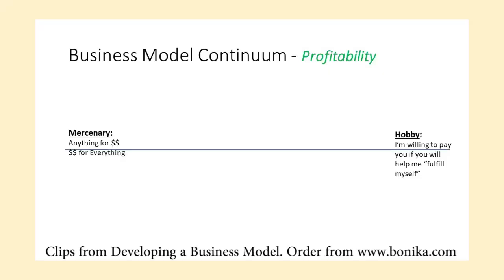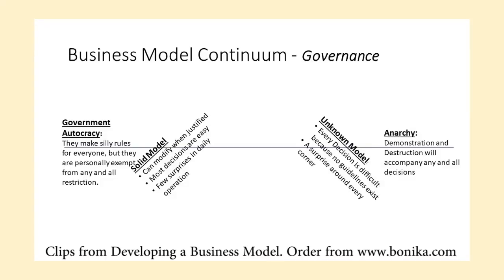The first continuum we're going to talk about is profitability. At one extreme you have the mercenary — a mercenary will do anything for a dollar, but it will be a buck for everything. At the other extreme you have a hobbyist: a super talented guru in the organization working on a fantastic project that has absolutely no practical application and for which no one is willing to pay. Most businesses fall somewhere in the middle.